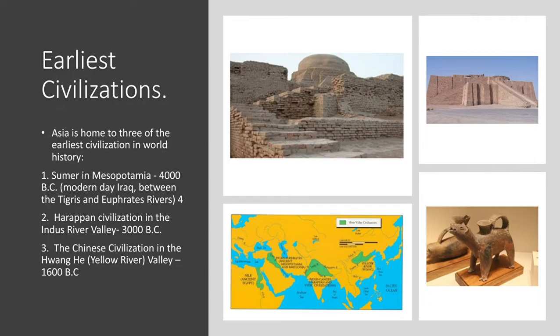The next one is the Harappan civilization, which developed in the Indus River Valley right here. This is a picture of its most famous city, Mohenjo-daro, which means 'the city of the dead.' It's a very unique civilization and definitely worth studying. The final civilization developed along the Yellow River — the Huang He River Valley — right here in China. This is an artifact from that early civilization, and it's really quite unique and interesting artwork.